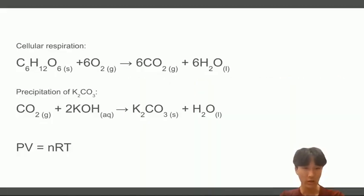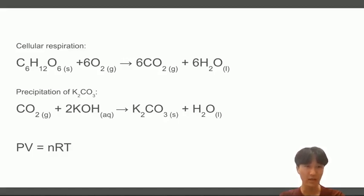Shown here is the equation for cellular respiration. Notice how the coefficients of O₂ and CO₂ are equal, meaning that as oxygen is consumed, equal moles of carbon dioxide are being produced. This means that the overall moles of gas would theoretically stay the same, keeping the pressure the same as well. We can lower the pressure by adding KOH, which reacts with CO₂ to produce solid K₂CO₃. Now the moles of gas would be decreasing, as CO₂ is formed by cellular respiration and subsequently precipitated into K₂CO₃.